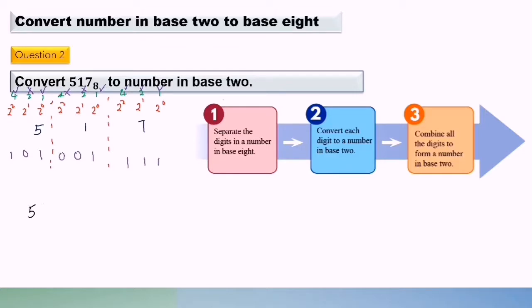So 1, 5, 7, base 8 is equals 1, 0, 1, 0, 0, 1, 1, 1, 1, base 2.